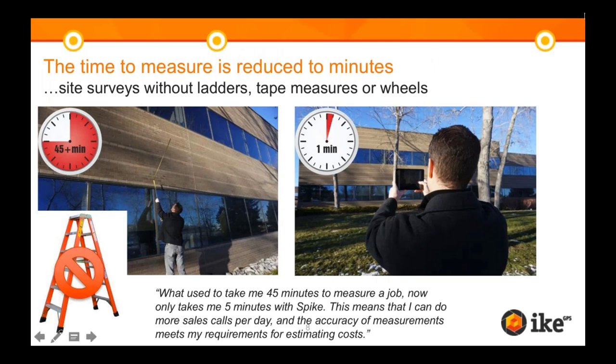With Spike, your time to measure is reduced to minutes. You can do your site surveys and all your measurements without pulling out a ladder, tape measures, or measuring wheel. As you can see from this quote, it significantly cuts down on the time it takes to measure a job. In this instance, one user found that what used to take 45 minutes to measure a typical job is now only five minutes.